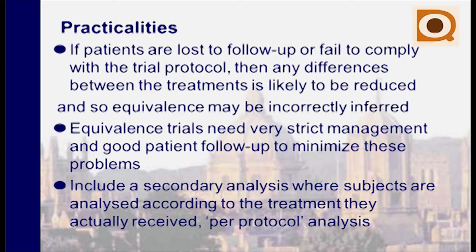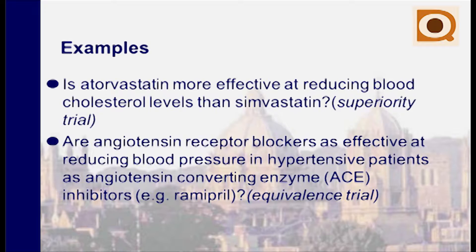Here are two quick examples of a superiority and equivalence trial. A superiority trial research question might be: is atorvastatin more effective at reducing blood cholesterol levels than simvastatin? Because of the phrase 'more effective,' this makes it a superiority trial. An equivalence trial question might be: are angiotensin receptor blockers — commonly referred to as valsartan — as effective at reducing blood pressure in hypertensive patients as ACE inhibitors? Because of the phrase 'as effective as,' this makes it an equivalence trial.